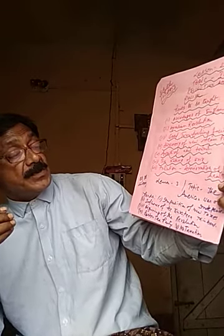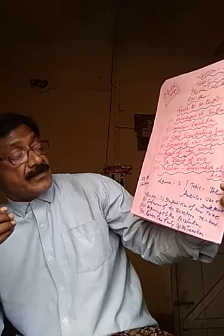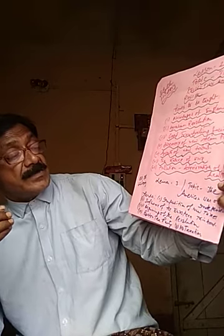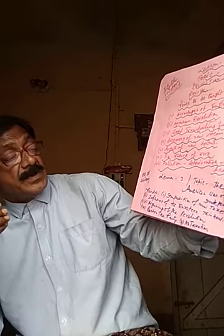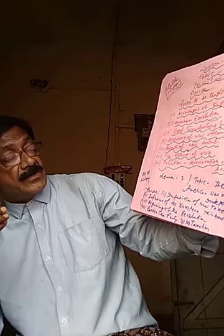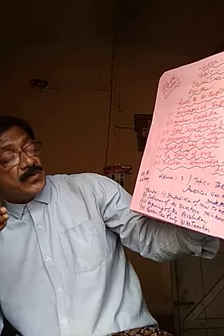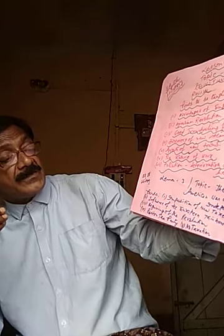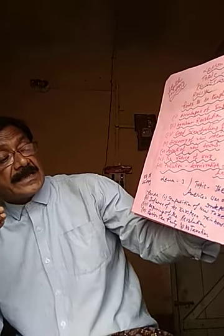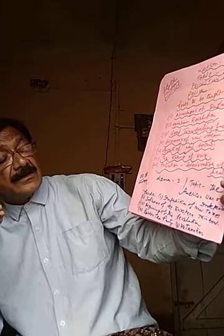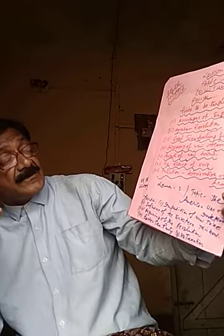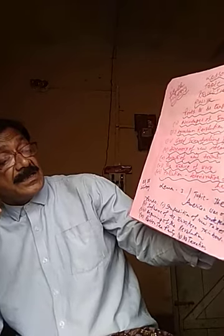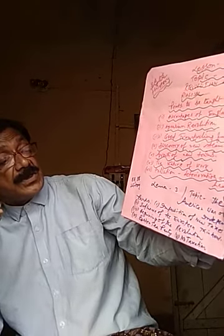First point: imposition of new taxes. Second point: influence of the European thinkers. Third point: beginning of the revolution. Fourth point: most country party. Fifth point: no taxes without representation. First point — imposition of new taxes.